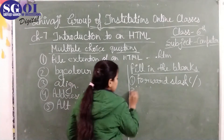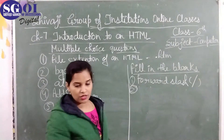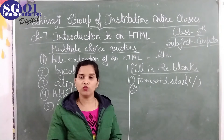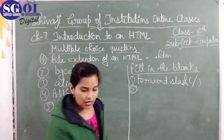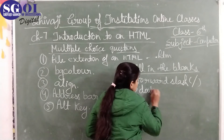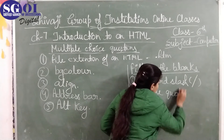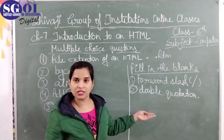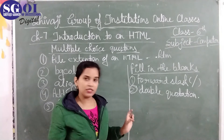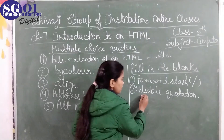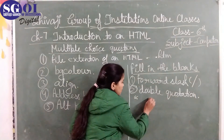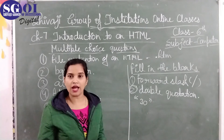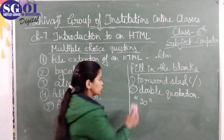Second fill-in-the-blank: all attribute values are enclosed in a dash mark. Attribute values are enclosed in double quotation marks. Always write the attribute value in double quotation marks.